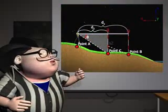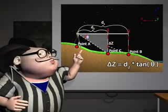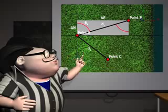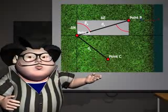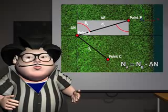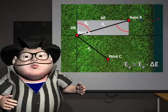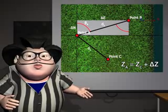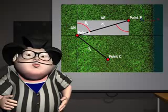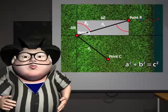The elevation difference from point A to point C, delta Z, can be calculated: delta Z is equal to D2 times the tangent of beta. Using the calculated delta N, delta E, and delta Z, the coordinates of A are: the northing of A equal to the northing of B minus delta N, the easting of A equal to the easting of B minus delta E, and the elevation of A equal to the elevation of C plus delta Z. Delta N, delta E, and delta Z can be calculated relative to point B or point C and can be checked using the Pythagorean theorem.